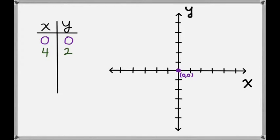Now let's look at the point (4, 2). Since we have an x-value of 4, that means we'll go to the right by 4. And we have a y-value of 2 — the positive direction for y is up, so we'll go up 2. This gives us the point (4, 2).